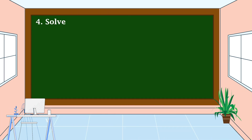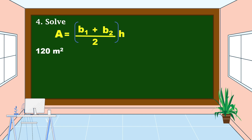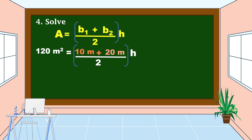Now let's carry out the plan and solve the problem. Using the formula — Area equals (base 1 plus base 2) divided by 2 times height — let's substitute the values. The area is 120 square meters, base 1 is 10 meters, and base 2 is 20 meters. Solving inside the parentheses first: 10 meters plus 20 meters equals 30 meters, divided by 2 equals 15 meters. Bring down h, the height.